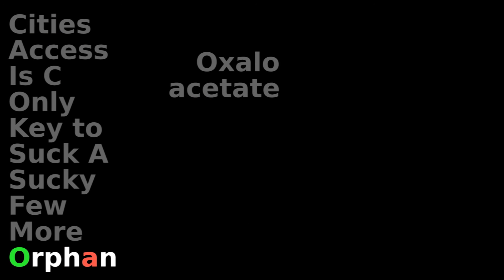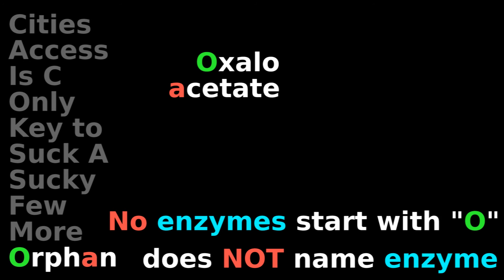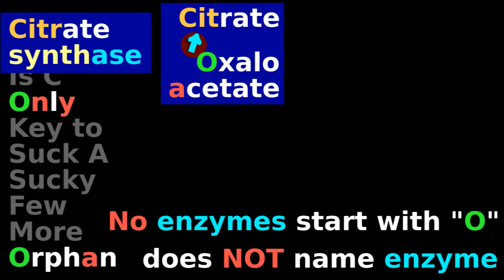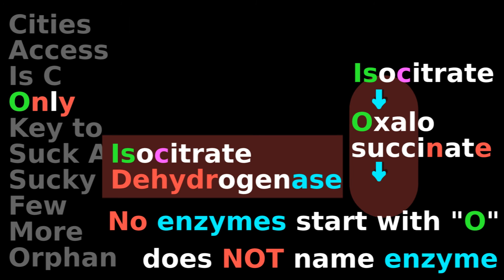Orphan really is an orphan, because orphan does not name an enzyme. In fact, there are no citric acid cycle enzymes that start with O, either for orphan or for only. What should be the orphan arrow is actually named after citrate of the citric acid cycle. And only is named by the second of those enzymes that do two steps, isocitrate dehydrogenase.